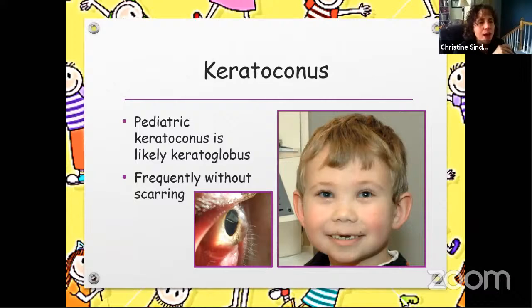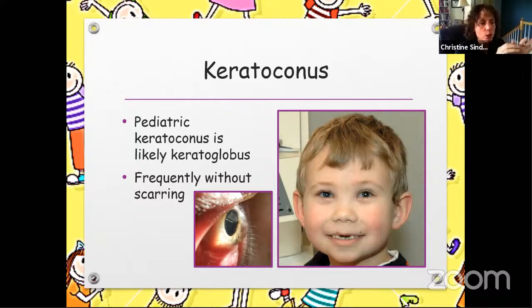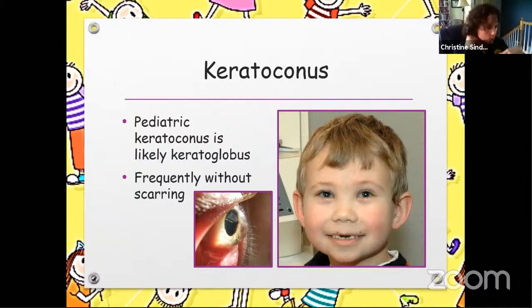If you think you have keratoconus in your pediatric population, make absolutely sure that you don't have keratoglobus. True keratoconus itself is very rare in the pediatric population. So if you start seeing those changes, really think keratoglobus and look at the whole cornea. This is going to be somebody that needs ocular protection because they are going to be more likely to rupture, especially if they're a busy child.